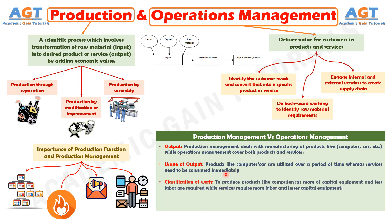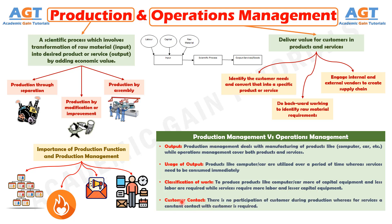Number 3, based on classification of work: to produce products like computers or cars, more capital equipment and less labor are required, while services require more labor and lesser capital equipment. And number 4, based on customer contact: there is no participation of the customer during production, whereas for services a constant contact with the customer is required. So, production management and operations management both are very essential in meeting the objectives of an organization.